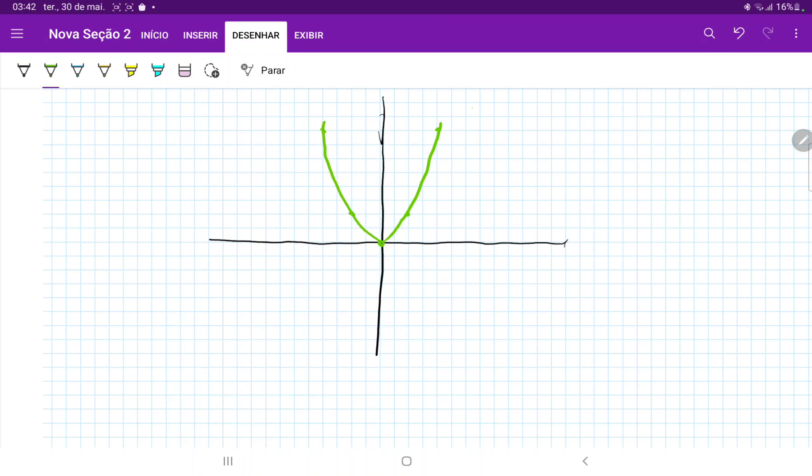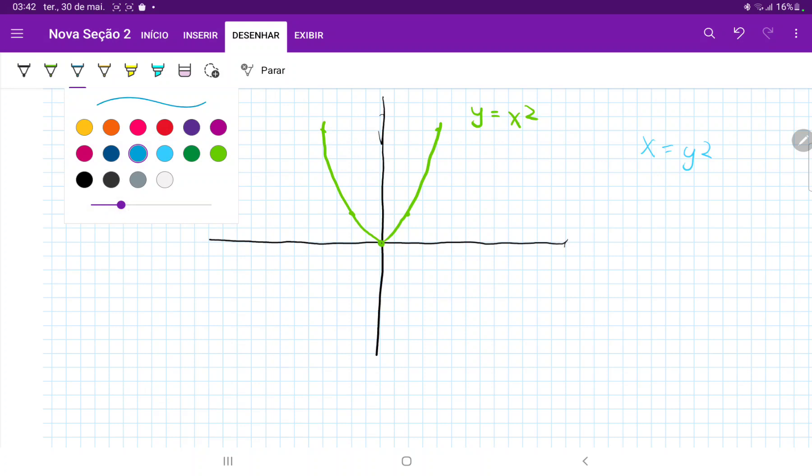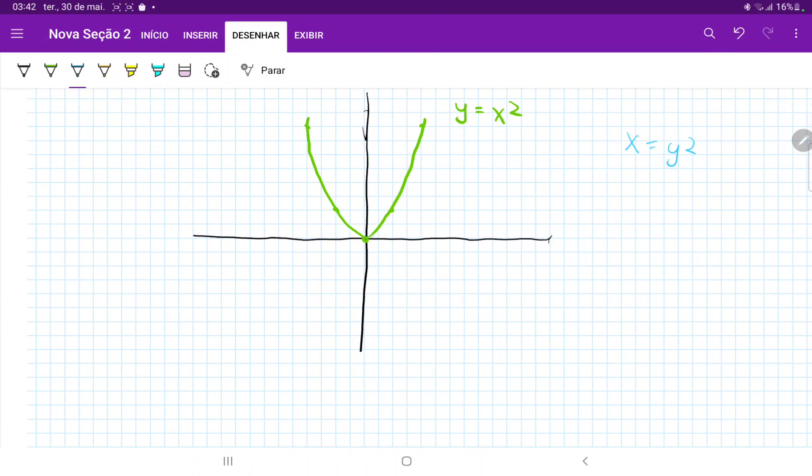So this is our curve y equals x squared. Our next curve is x equals y squared. Now for this curve here, maybe I'm going to do it in darker blue. For this curve here, it looks the same, this exact same behavior, except we're going to flip it over because now x is a function of y. So our image in our domain, it gets flipped over and we are going to draw this like so.